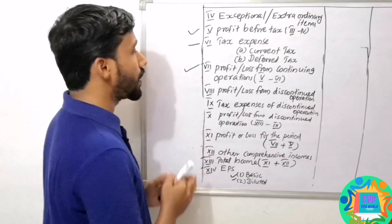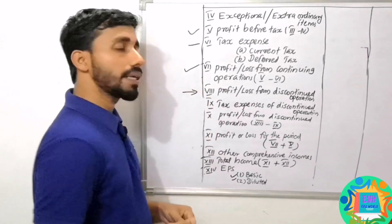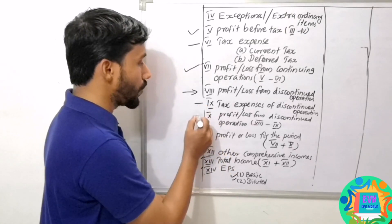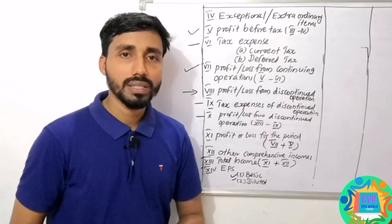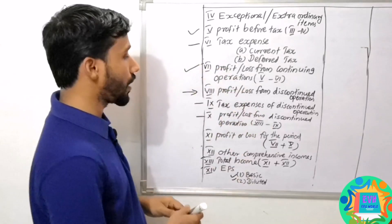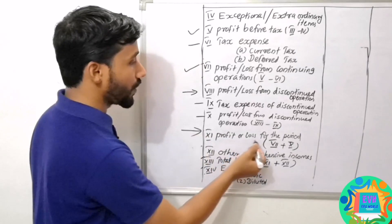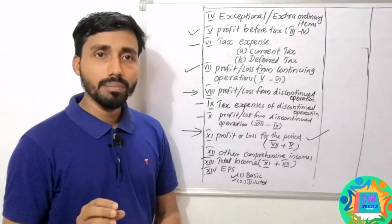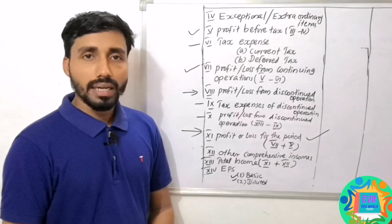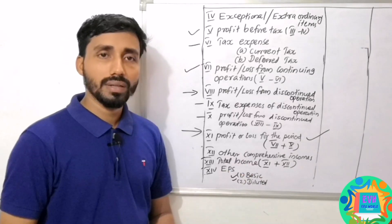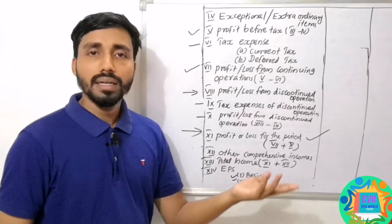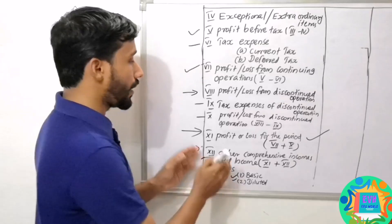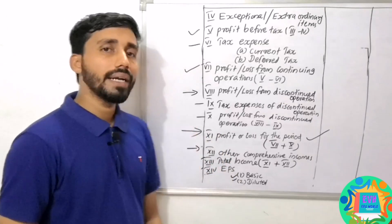That means Profit or Loss from Continuing Operations, and also Profit or Loss from Discontinued Operations. Combined, that gives us Profit or Loss for the Period — the total profit figure.